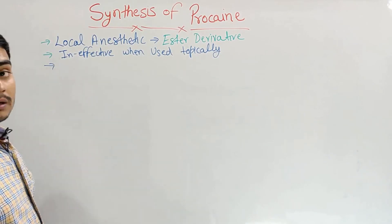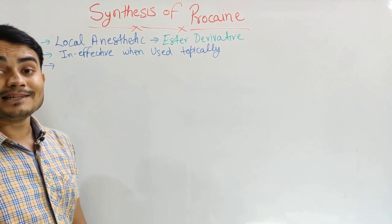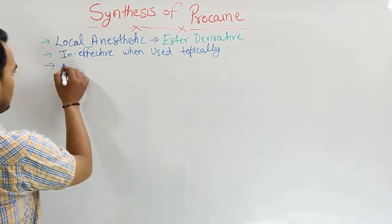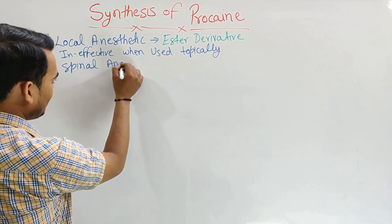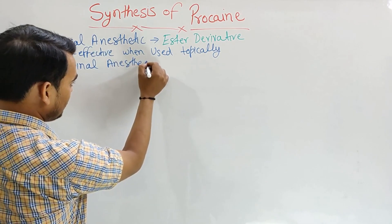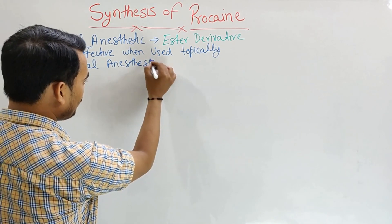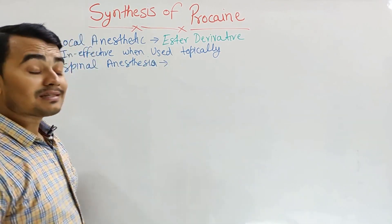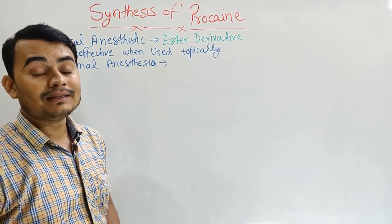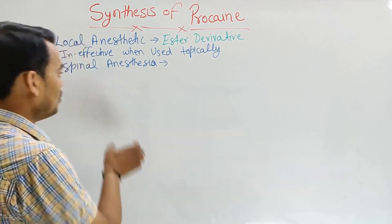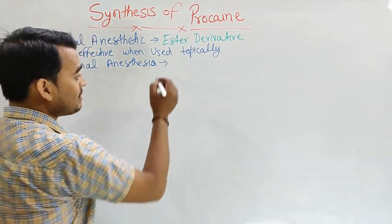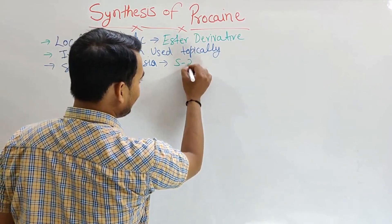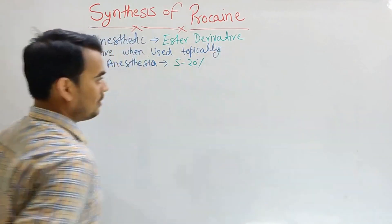What is the use of procaine? Procaine mainly used as spinal anesthesia. But there is a clear point that if the concentration of procaine is changed, then their use can be changed. When spinal anesthesia procaine is used, then its concentration will be 5 to 20%.